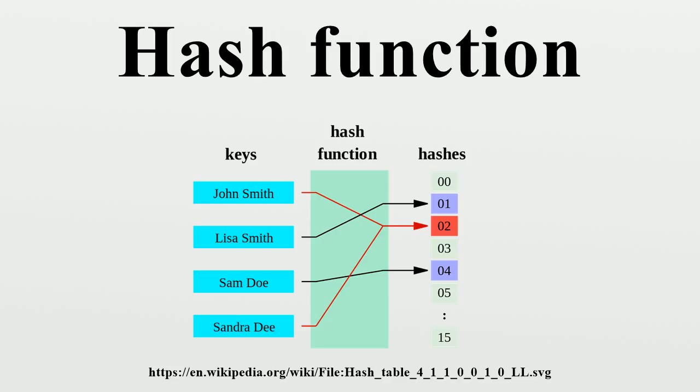Caches. Hash functions are also used to build caches for large datasets stored in slow media. A cache is generally simpler than a hashed search table, since any collision can be resolved by discarding or writing back the older of the two colliding items. This is also used in file comparison.